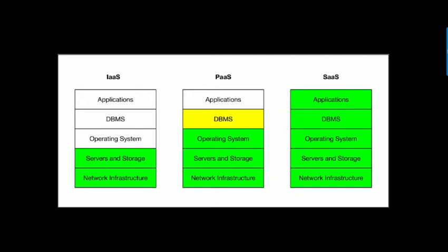This graphic is another perspective on who provides and manages the various IT resources across the three cloud services. One thing to remember is how this is just a general look — what is provided can vary between vendors. In this graphic, green is provided by the CSP. The yellow is something that may or may not be provided or managed.